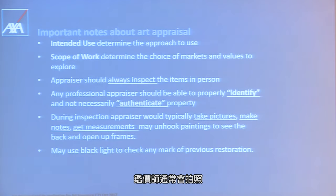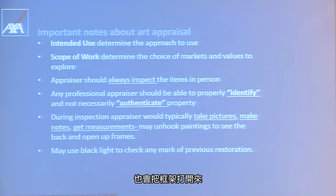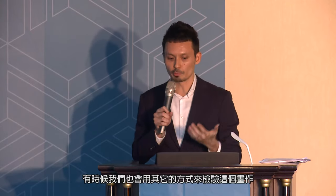During the inspection, the appraiser will typically take pictures, make notes, and get measurements. It is quite common for appraisers to unhook paintings from the wall or open up frames so they can see the back of the painting to check for labels, signatures, or restoration marks. Sometimes black light is also used to check for marks of any previous restoration.